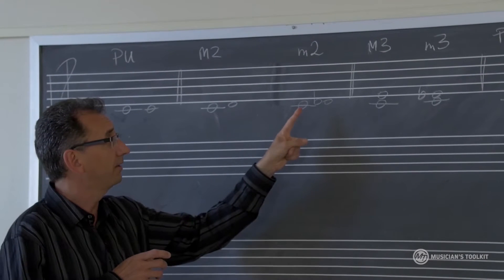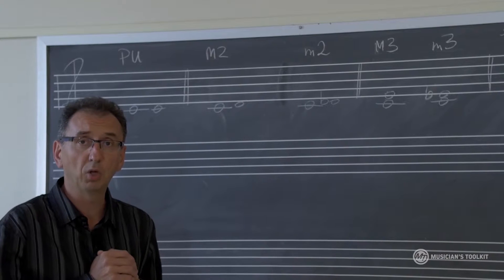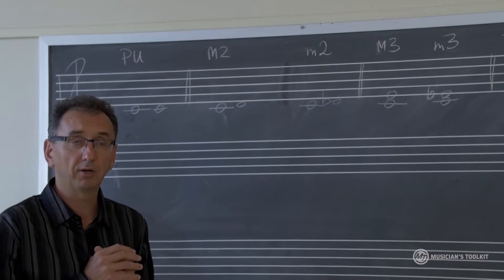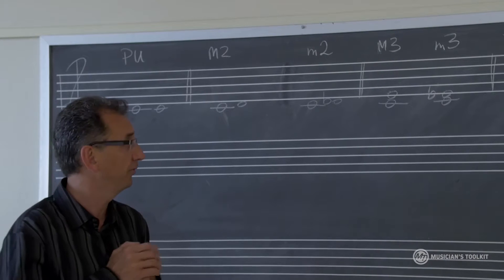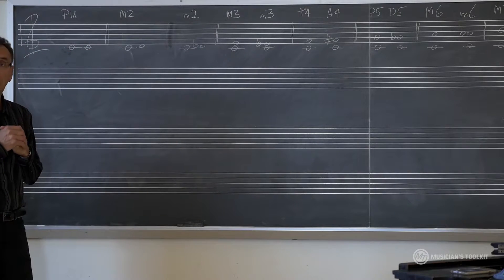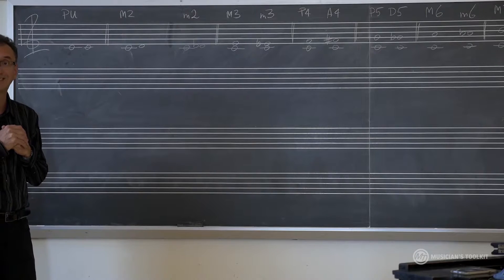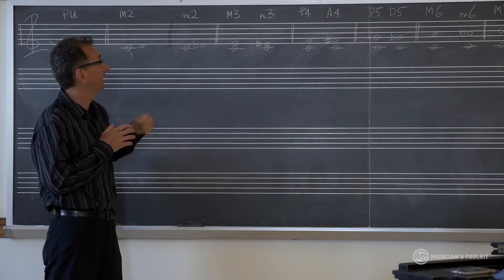Notice that we label major second C to D flat, not C to C sharp, because major second uses two different letter names for the nodes. C to C sharp would have been augmented unison because it uses the same letter name. So C to D flat is a minor second.